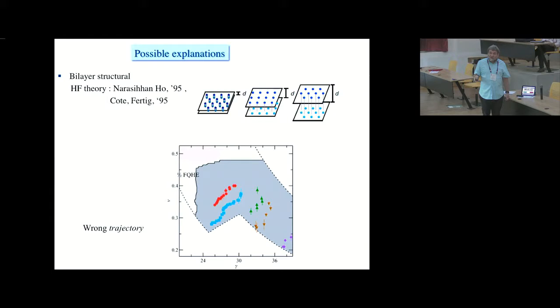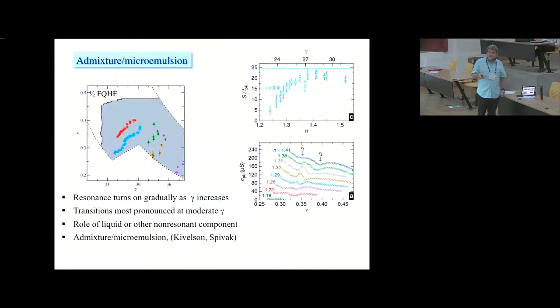Whereas, the composite fermion transition is driven by filling factor. Another thing that may be going on, I don't know whether it explains the transitions, but it certainly may have to do with some of the phenomenology that we're seeing, is that there may be admixture or even micro-emulsion phases as we move into the insulating phase. I've noted that the resonance turns on gradually as you increase gamma, and the transitions are most pronounced, especially showing half peak jumps, at moderate gamma. So, there may be some role to a liquid or other non-resonant component that's being built into this. This S over F peak just shows the increase of participation as we move into this.